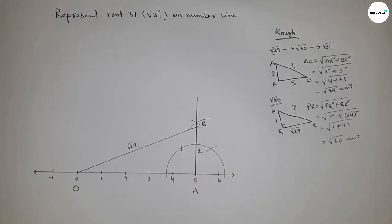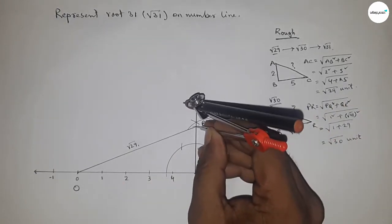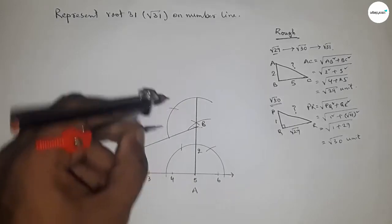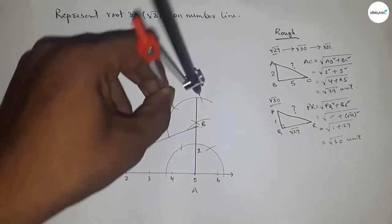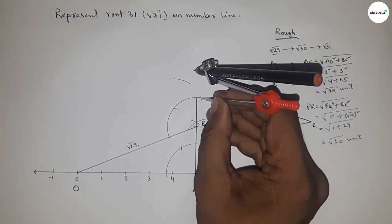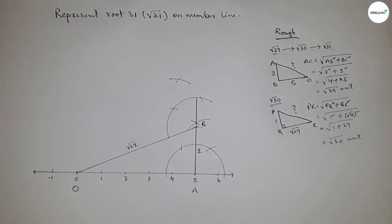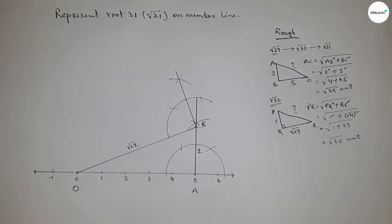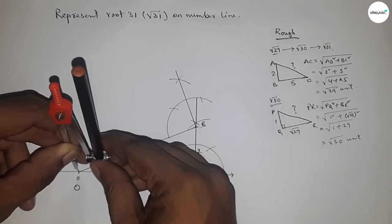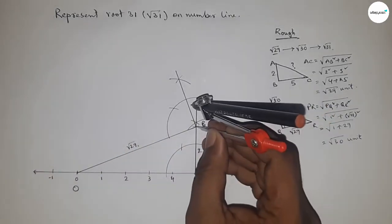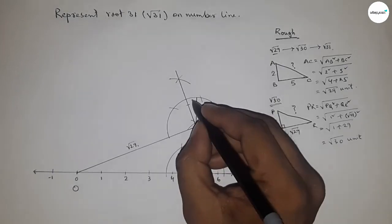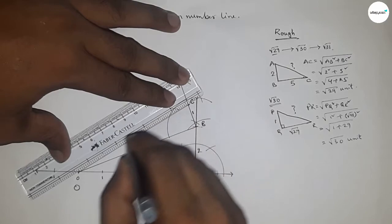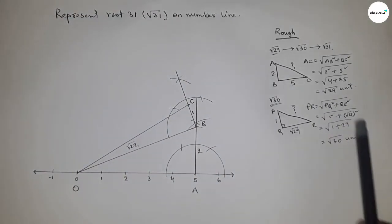We apply this concept here. First draw a 90-degree angle at B using the compass — take any length, draw arcs, and construct the right angle. Then take one unit length by compass, place it at B, and mark point C. Now join O and C — we can say that OC equals root 30 units.